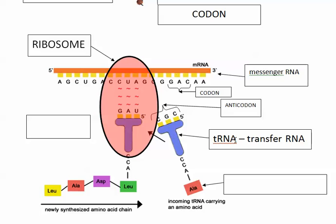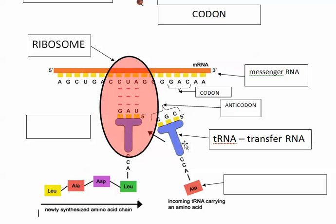A transfer RNA molecule actually brings an amino acid with it, carrying the correct amino acid over and lining it up. As this mRNA is fed through the ribosome, the next tRNA comes in, drops off its amino acid, and keeps on going. There are lots of animations of this available. As these tRNA molecules come in and drop off the next amino acid, this chain of amino acids grows longer and longer.